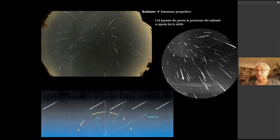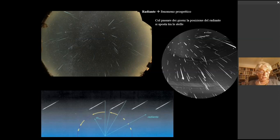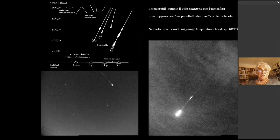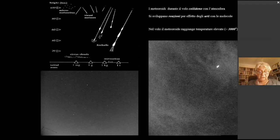Si tratta però di un fenomeno illusorio, prospettico, poiché le traiettorie dei corpuscoli nello spazio sono tutte parallele, come si vede nell'immagine. La lunghezza della scia dipende dalla posizione della meteora rispetto all'osservatore: può essere più o meno lunga, oppure puntiforme se il meteoroide viene incontro all'osservatore. Le meteore generalmente diventano visibili a 120-90 km di altezza.